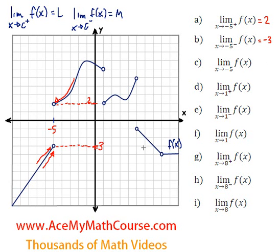Now let me tell you a very important concept. In order for a limit — not from the left, not from the right, but just a straight limit of f — to exist, the limit coming from the right and coming from the left must be the same. If they're not the same, a limit won't exist. So the limit as x approaches negative 5 of f won't exist in this case, just because these two are different.